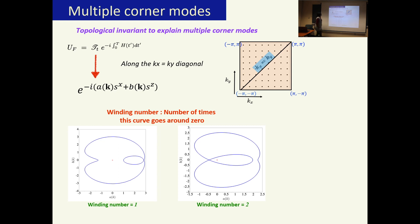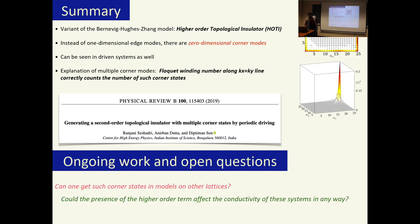To do that we use this time evolution operator along the kx equals ky diagonal which is shown there, and we do a parametric plot of these two coefficients here. We take it and write it in this form and we do a parametric plot of these as a function of k, and we find that we clearly get more than winding number one, and we manage to get up to winding number three or four even, which I have not shown here. Wherever we get a winding number of greater than one, we find that there are the correct number of corner modes as they are predicted by the winding number.